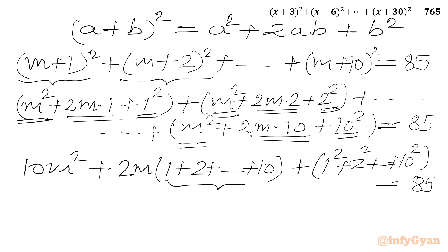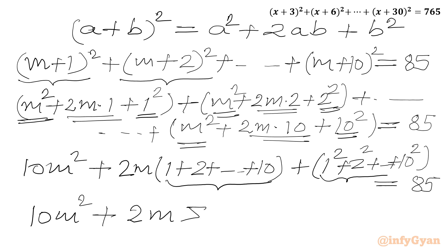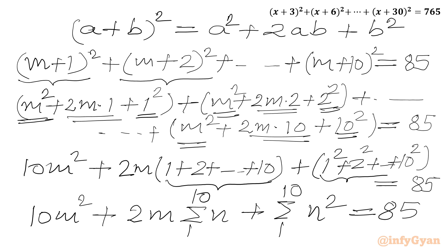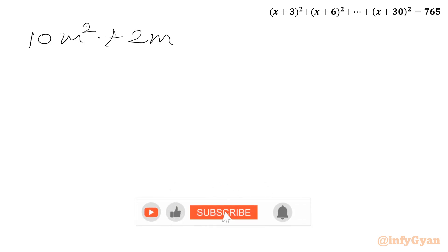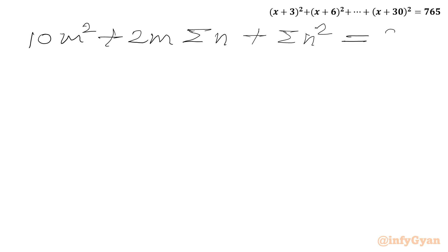This is the sum of all natural numbers from 1 to 10, and the sum of squares of all natural numbers from 1 to 10. So I can write 10m² plus 2m times Σn (n from 1 to 10) plus Σn² (n from 1 to 10) equal to 85.